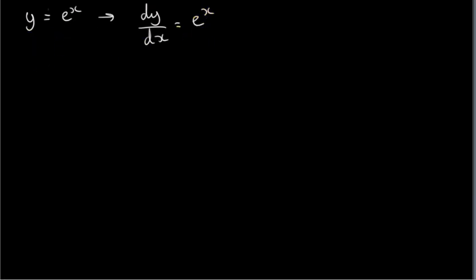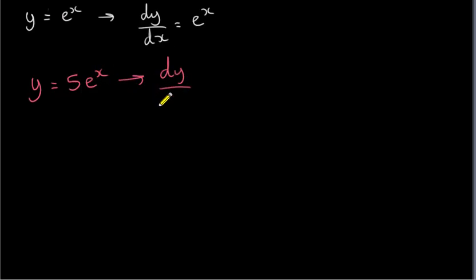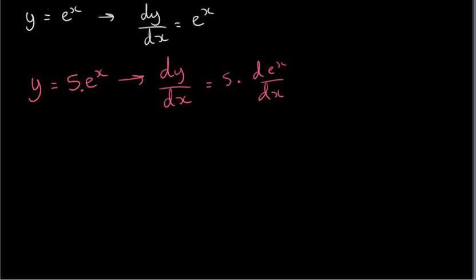Now let's suppose we have something more complicated. Suppose we have y equals 5e to the power of x. Actually, this is only slightly more complicated. If we're getting the derivative, we just have a constant times e to the power of x, so it's just 5 times the derivative of e to the power of x. We can leave that constant alone. So multiplying by a constant doesn't do anything — we just get 5 times e to the power of x, which is straightforward.